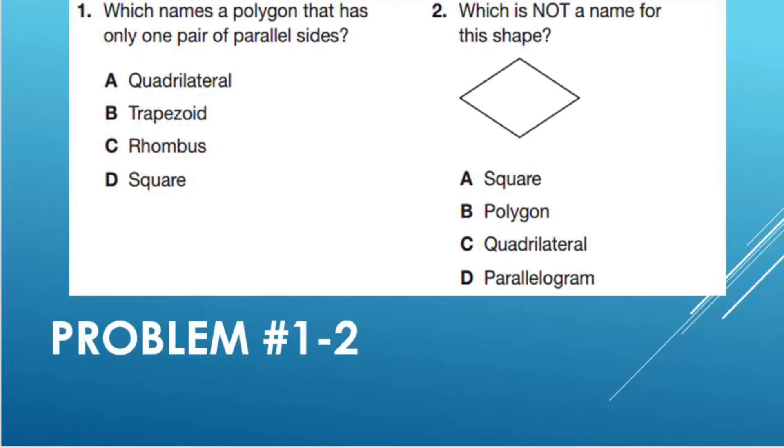Now let's take a look at problems one and two. Number one says, which names a polygon that has only one pair of parallel sides? A: quadrilateral, B: trapezoid, C: rhombus, or D: square.